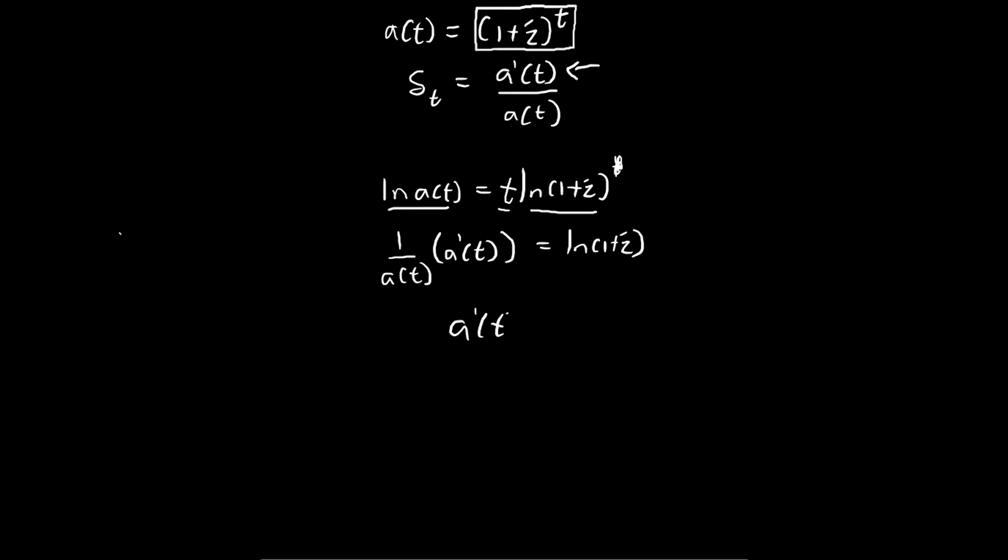So we see that a prime of t is equal to a(t) times natural log 1 plus i. Going back to the force of interest, we see that it's equal to a(t) natural log 1 plus i divided by a(t).